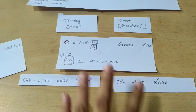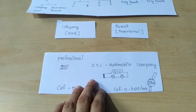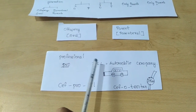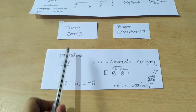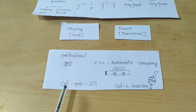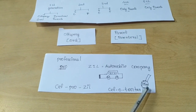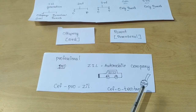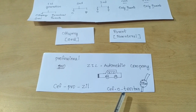The third drug: the offspring is a professional who works at Zil, an automobile company — using the word 'pro' and 'zil'. So the oral drug is Cefprozil. His father wears a Titan watch, so the parenteral drug is Cefotetan — instead of 'titan' (T-I-T-A-N) we write T-E-T-A-N, giving us Cefotetan.